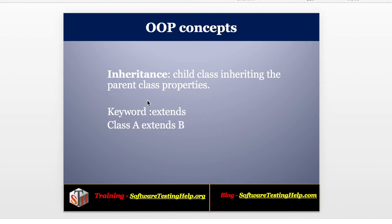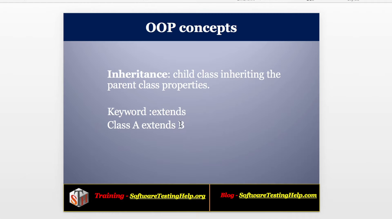Now we are going to see about the main important concept in object oriented programming. Yes, inheritance is the important concept in OOP. What is inheritance? Inheritance means a child class inheriting the parent class properties — one class is inheriting another class's properties. For inheritance the extend keyword is used. Class A extends Class B means Class A is a child class and Class B is the parent class, with the child class extending the properties of the parent class.